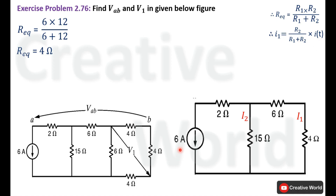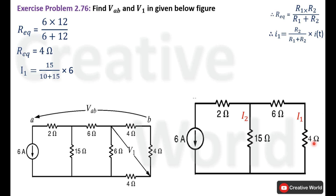Here I_total is the total supplied current, which is 6 Ampere. R2 is the resistance of the opposite branch, which is 15 Ohm, and R1 is the resistance of the same branch, which is the sum of 6 Ohm and 4 Ohm. Placing values: I1 equals 15 multiplied by 6, divided by (10 plus 15). The product of 15 and 6 is 90, and the sum of 10 and 15 is 25. So 90 divided by 25 gives 3.6 Ampere.